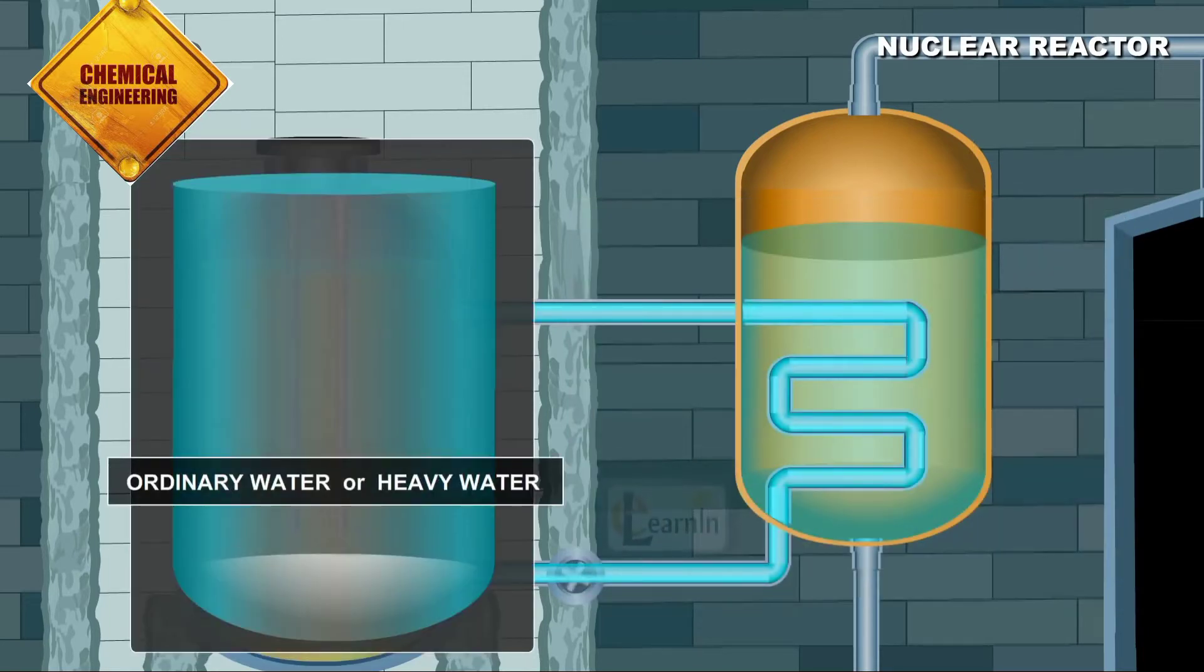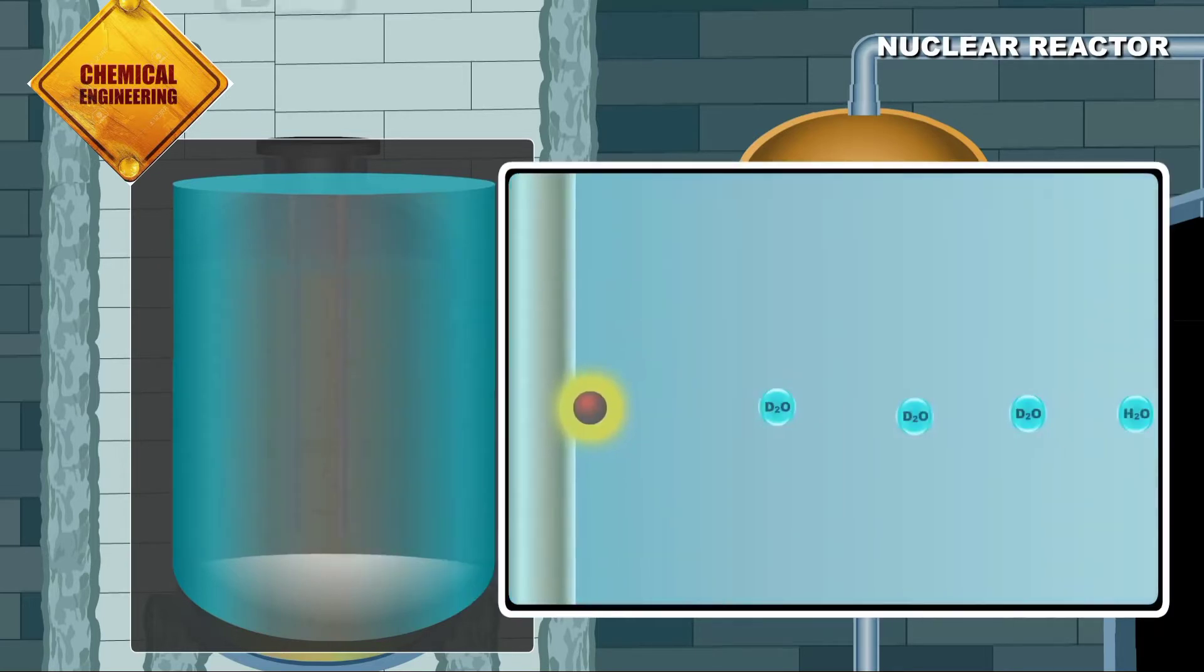Commonly ordinary or heavy water is used as a moderator in nuclear reactors because of the deuterons present in them which are capable of slowing down the neutrons speed.